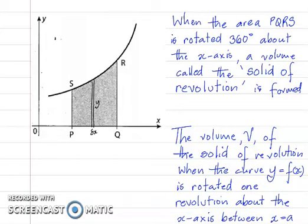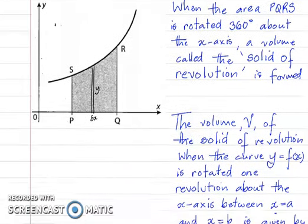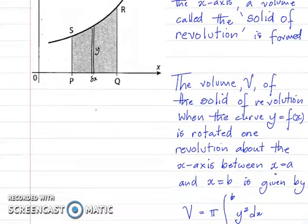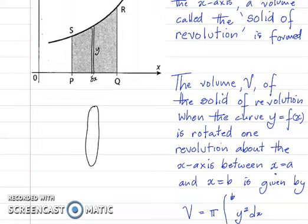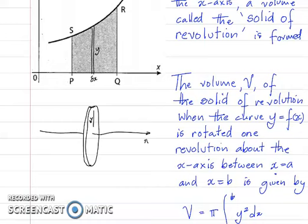The height of the strip is y and the thickness is delta x. Now if I rotate this very thin strip about the x-axis, a solid is formed. The x-axis is here — I rotate this strip one time about the x-axis. The height, or radius of the solid, is still y, and the solid that is approximated is a cylinder with thickness delta x.